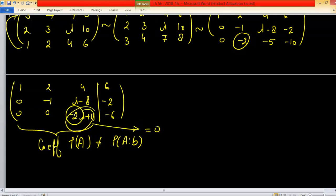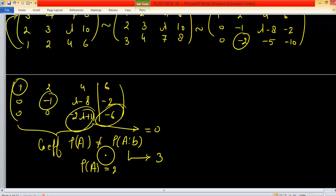If this entry is zero, then the rank of the augmented matrix will have three non-zero rows, meaning rank 3. The rank of the coefficient matrix will be 2, and these two are not equal.